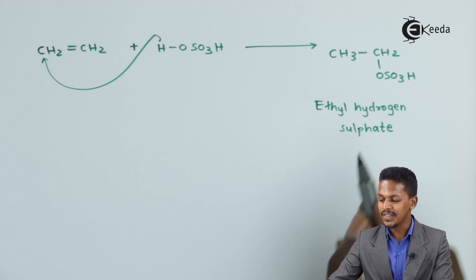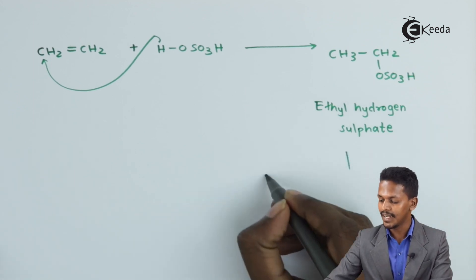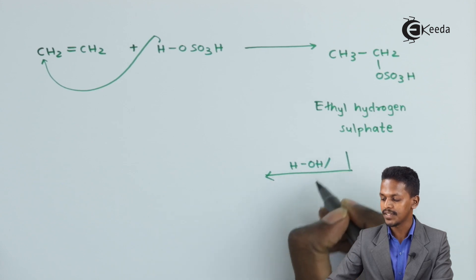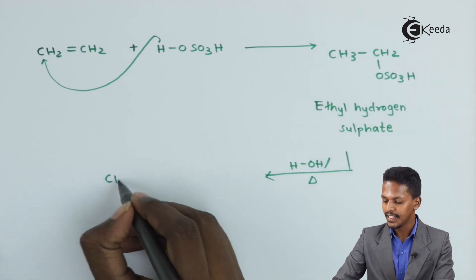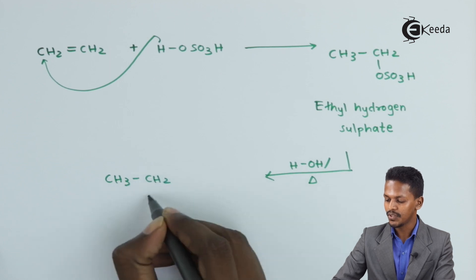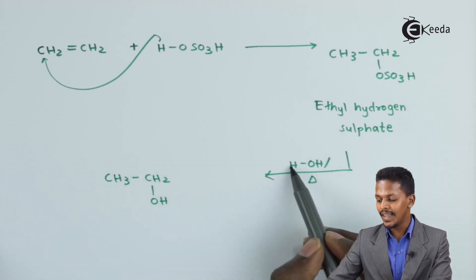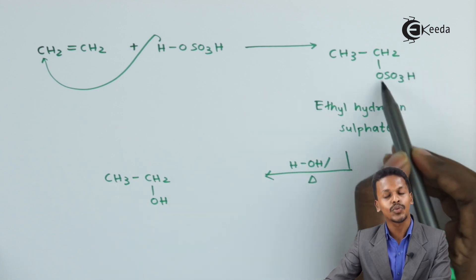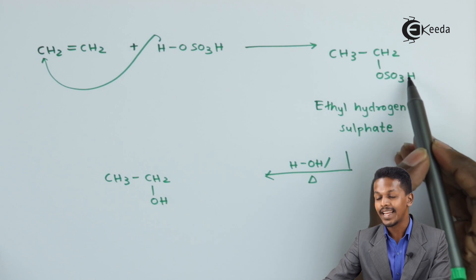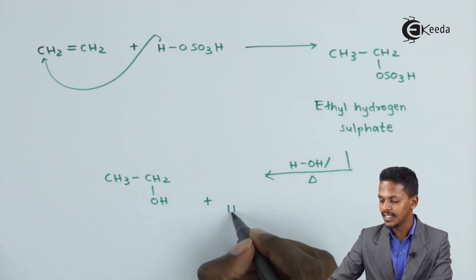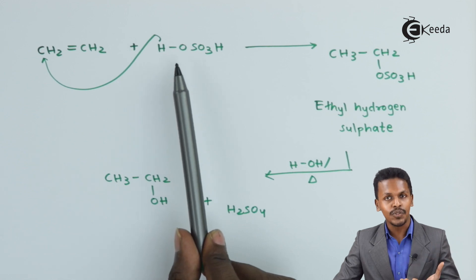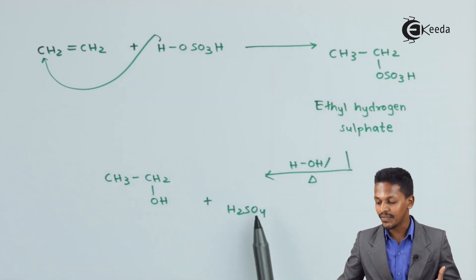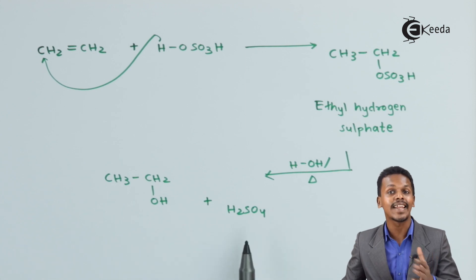Ethene hydrogen sulfate is not the final product we need, so we treat it with HOH and supply heat. The product is then converted into CH3CH2OH — ethanol. This happens because H replaces SO3H, and OH attaches while H2SO4 is released as a byproduct. Since we initially used H2SO4 and recover it as a byproduct, this is an acid-catalyzed reaction where H2SO4 acts as a catalyst. The product is a primary alcohol.